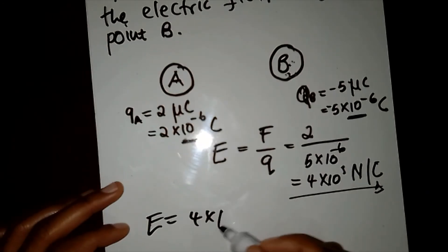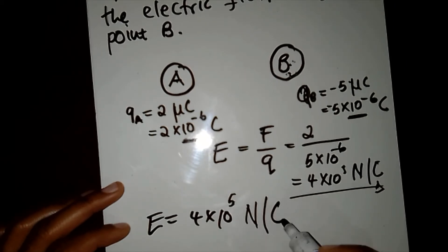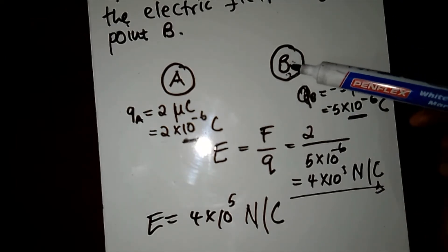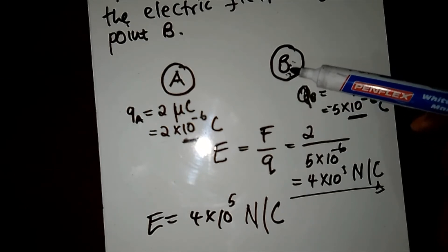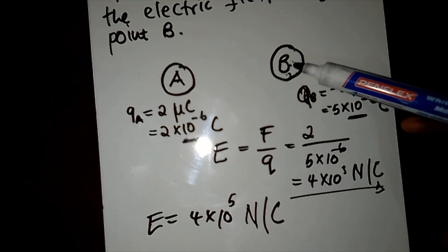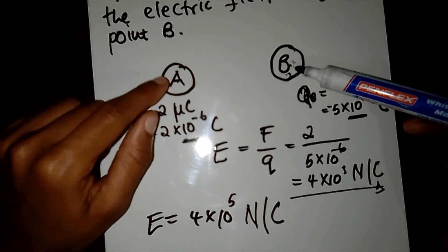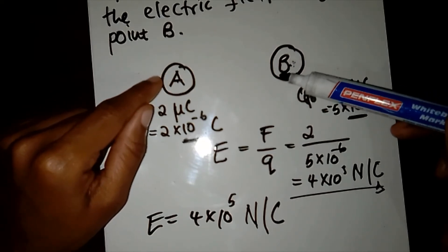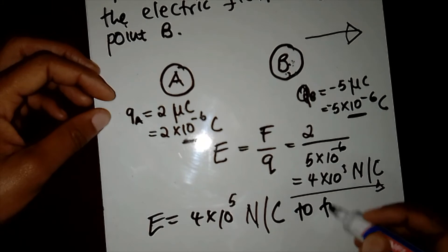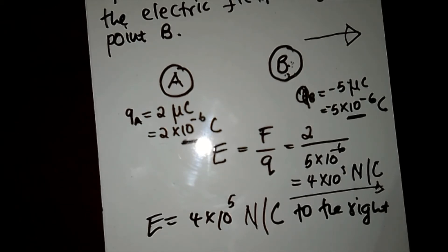So we have found E = 4 × 10⁵ N/C. Now, what is the direction? The direction would be the direction that charge b would move if it were positive. If b were positive and a is positive, they would repel each other, so the electric field direction would be to the right.